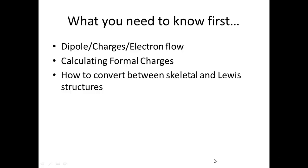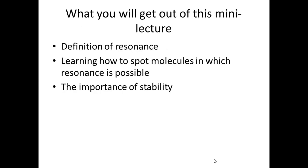Today's lecture deals with resonance, but before we get into resonance we need to cover a couple of things: dipoles, electron flow, partial positives and partial negatives. You need to understand that electrons will never flow away from a positive charge — they will always flow towards a positive charge. You also need to know about calculating formal charges and how to convert between skeletal and Lewis structures, since many resonance forms start in skeletal form.